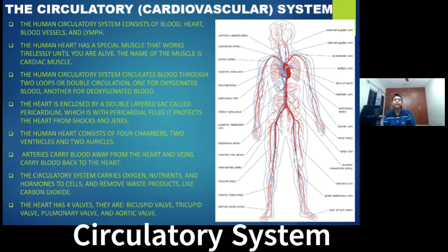Starting with the components, the circulatory system consists of the heart, blood vessels, blood, and lymph. Lymph is going to be continued in another episode.